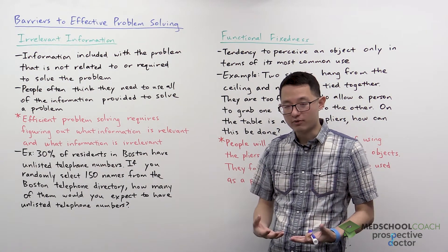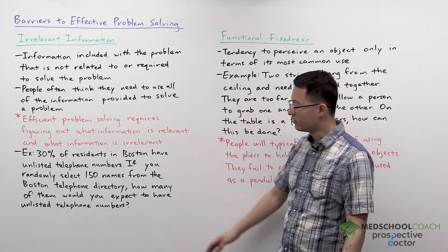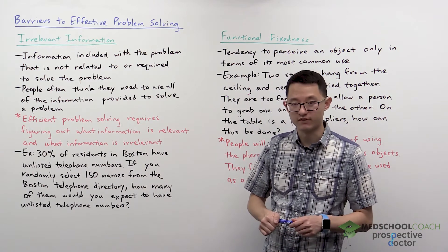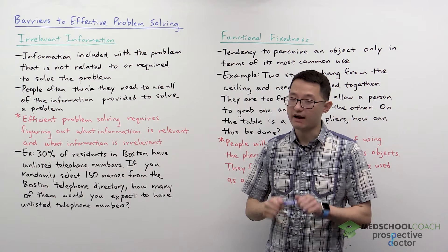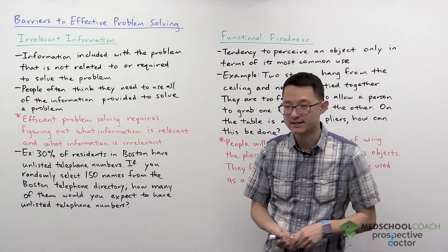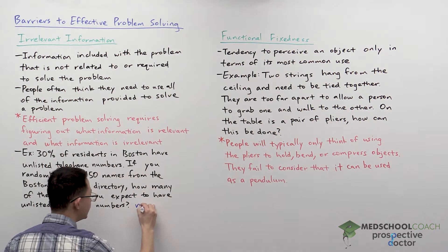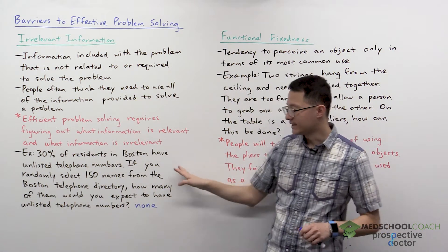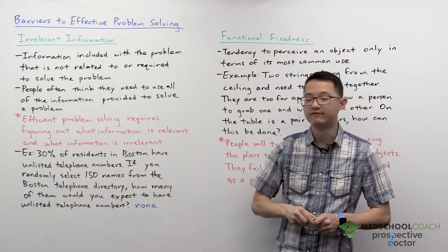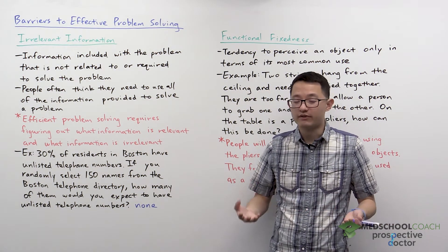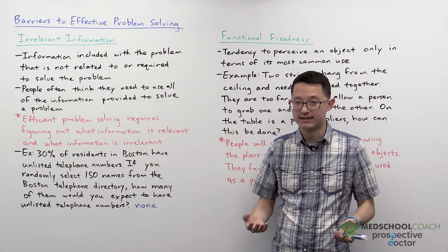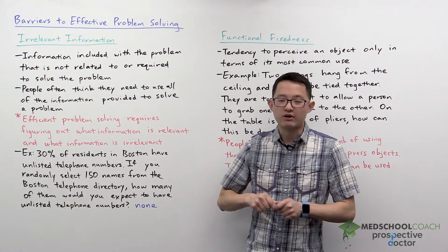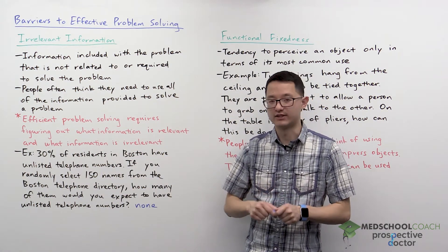A lot of people who are trying to answer this question will think, oh, I'm given 30% and 150, so the answer must be 30% of 150, or 45 people. However, that's not the case. The answer to this question is none. That's because all 150 names were taken from the Boston Telephone Directory — if they're in the telephone directory, that means all of their numbers are listed. So this is an example of how irrelevant information — the 30% — is a distractor and not required to answer the question.